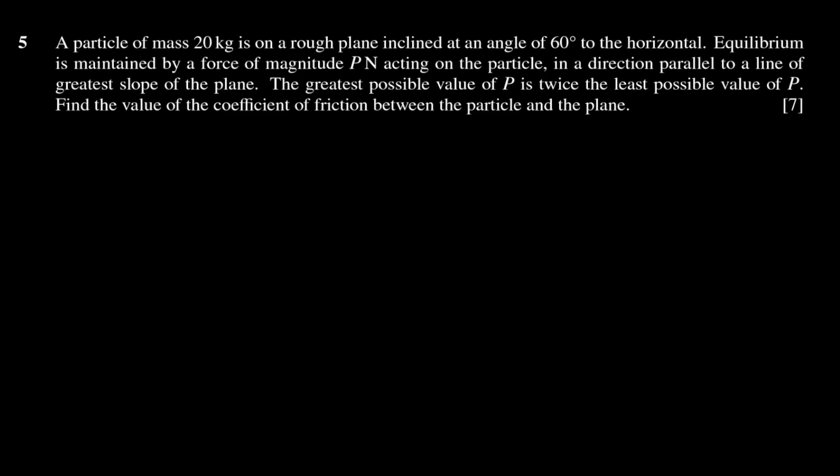I want to look at this particular question taken from a Mechanics 1 paper, that is paper 4. We've got a particle of mass 20 kilograms on a rough plane inclined at an angle of 60 degrees. Equilibrium is maintained by a force of magnitude P newtons in a direction parallel to a line of greatest slope of the plane. The greatest possible value of P is twice the least possible value of P. We want to find the coefficient of friction between the particle and the plane.